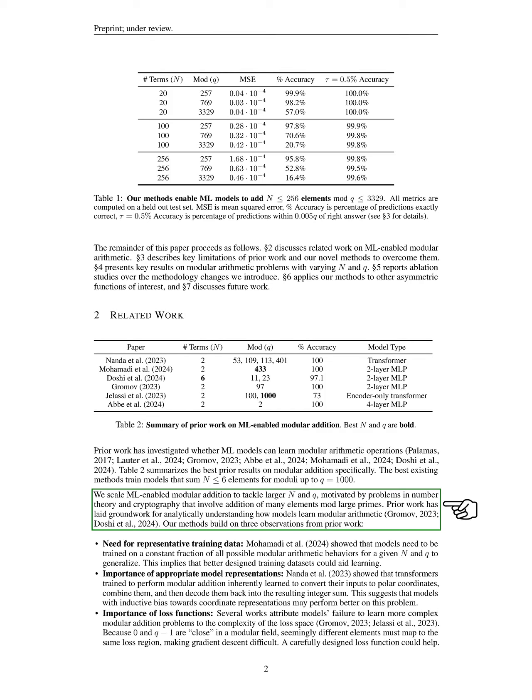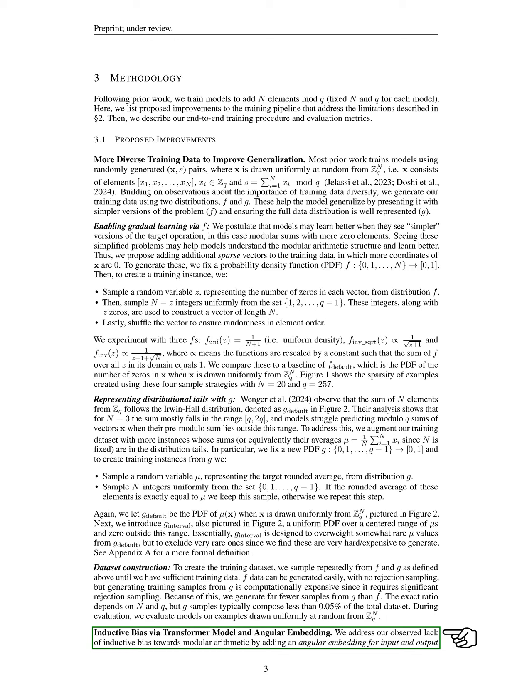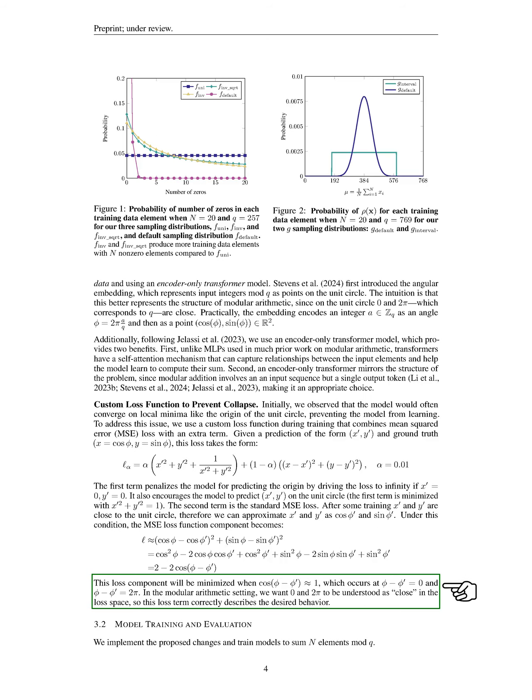We generate training data using two distributions to ensure diversity and to help the model learn better. We also implement an angular embedding to enhance the model's understanding of modular arithmetic and use an encoder-only transformer model to capture relationships between input elements effectively. Finally, we address the issue of models converging on local minima by using a custom loss function that combines mean-squared error with an additional term to prevent the model from predicting the origin, thus encouraging it to learn the correct modular relationships.